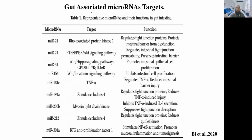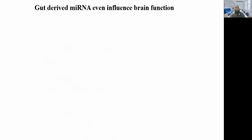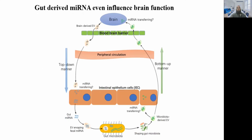Not only do gut microbiome-derived miRNA have effects in the gut, but miRNA produced and associated with the gut may also influence brain function. A recent article shows that miRNA derived and produced in the gut may influence the brain because it can enter circulation and travel to the brain.